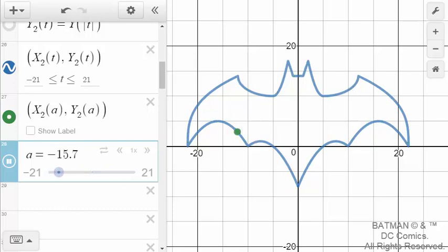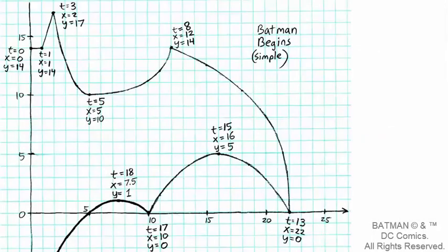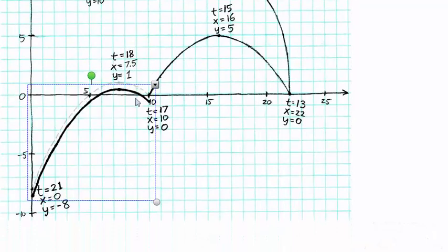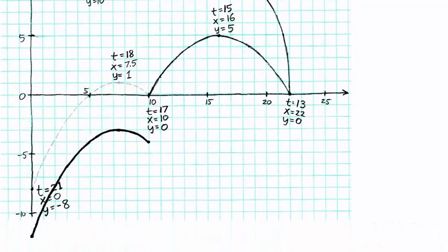The Batman design that we used for this example could be drawn as one continuous curve, but what if our design includes a jump discontinuity? For example, let's say that for some reason I want the tail to disconnect at x equals 10, y equals 0, and move down four units.